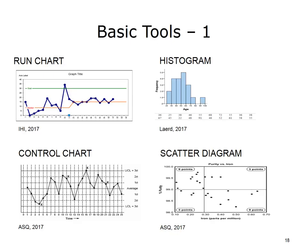Run charts are plots of data arranged chronologically that can be used to determine the presence of some types of signals of special cause variation in processes. A center line, usually the median, is plotted along with the data to test for shifts in the process being studied. A control chart consists of chronological data along with upper and lower control limits that define the limits of common cause variation. A control chart is used to monitor and analyze variation from a process to determine if that process is stable and predictable, or unstable and showing signals of special cause variation.